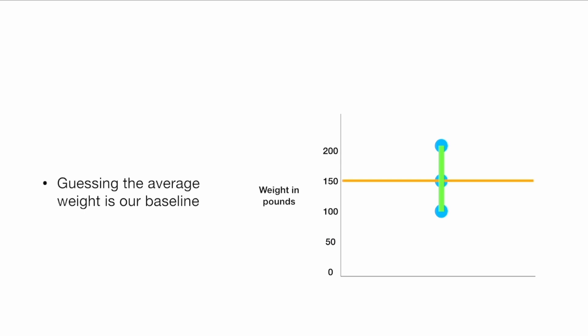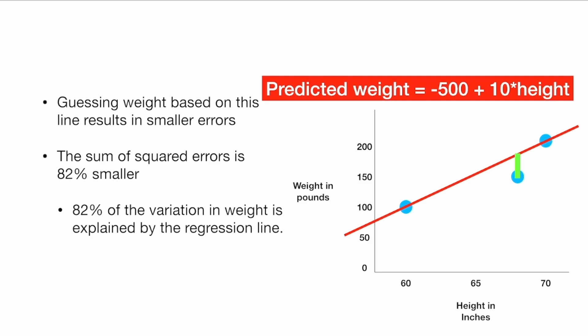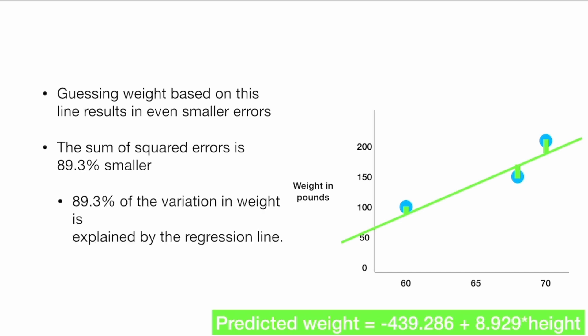Guessing the average weight is our baseline. Guessing weight based on the red line results in smaller errors — the sum of squared errors is 82% smaller. This is what we mean when we say 82% of the variation in weight is explained by the regression line, or explained by height. The R-squared is 82%. Guessing weight based on the green line results in even smaller errors. The sum of squared errors is 89.3% smaller than our original guess where we guessed everyone was 150 pounds. 89.3% of the variation in weight is explained by the regression line — the R-squared is 89.3%.